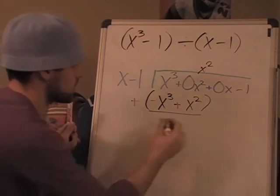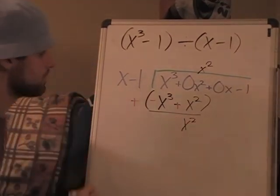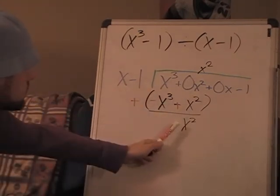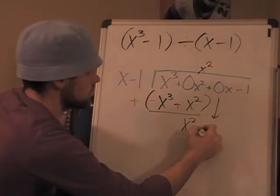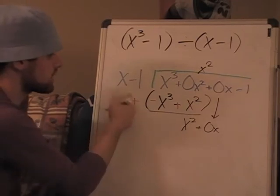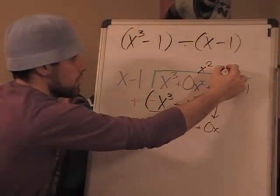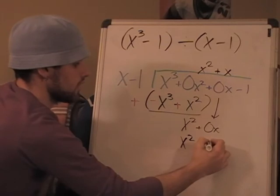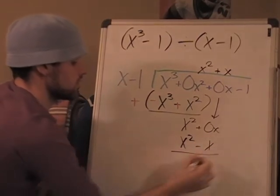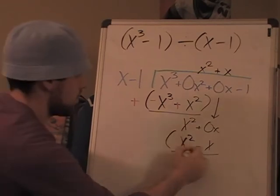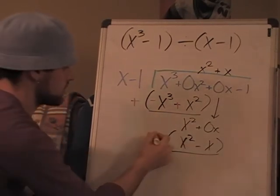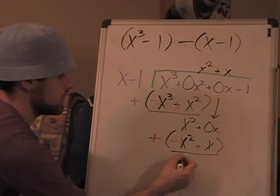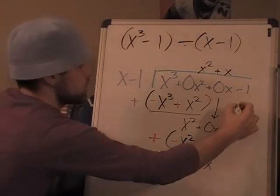How do you make x look like x²? Bring down the zero x. x times x would give us x². So x times x is x², x times negative one is negative x. Subtracting - x² minus x² is nothing, and this is positive x.